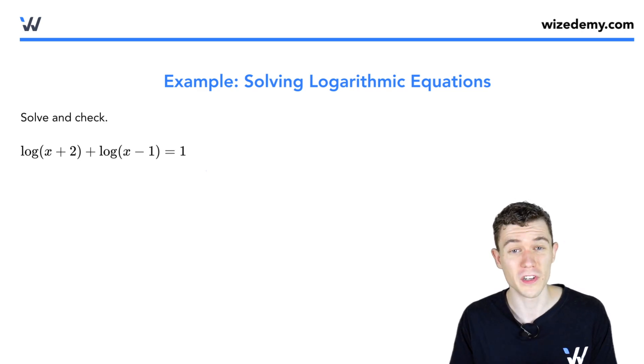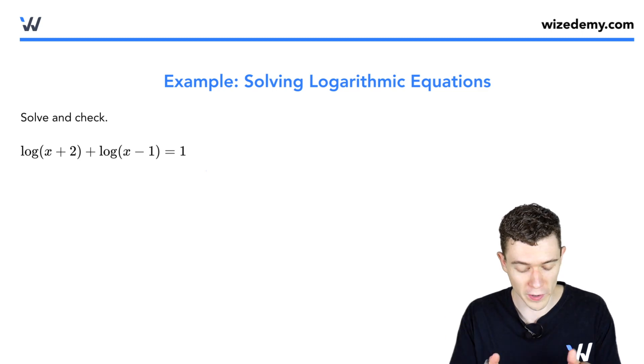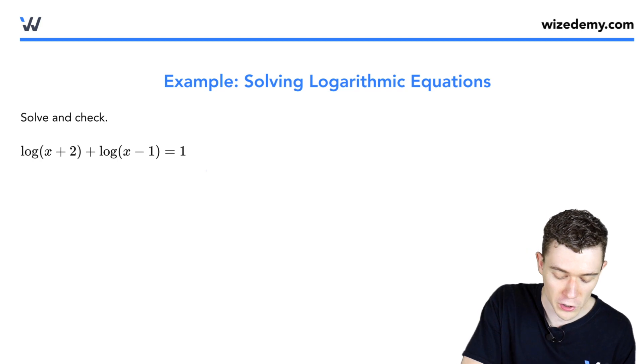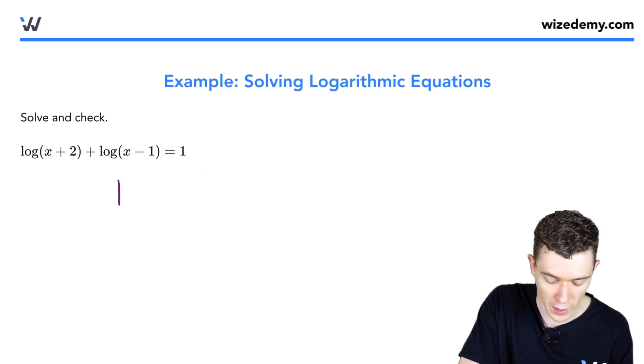Let's solve this logarithmic equation, and we have to make sure we check our answers. Step one is to write all the logarithms as a single logarithm. We have two logarithms on the left. We should combine those with our sum to product rule.